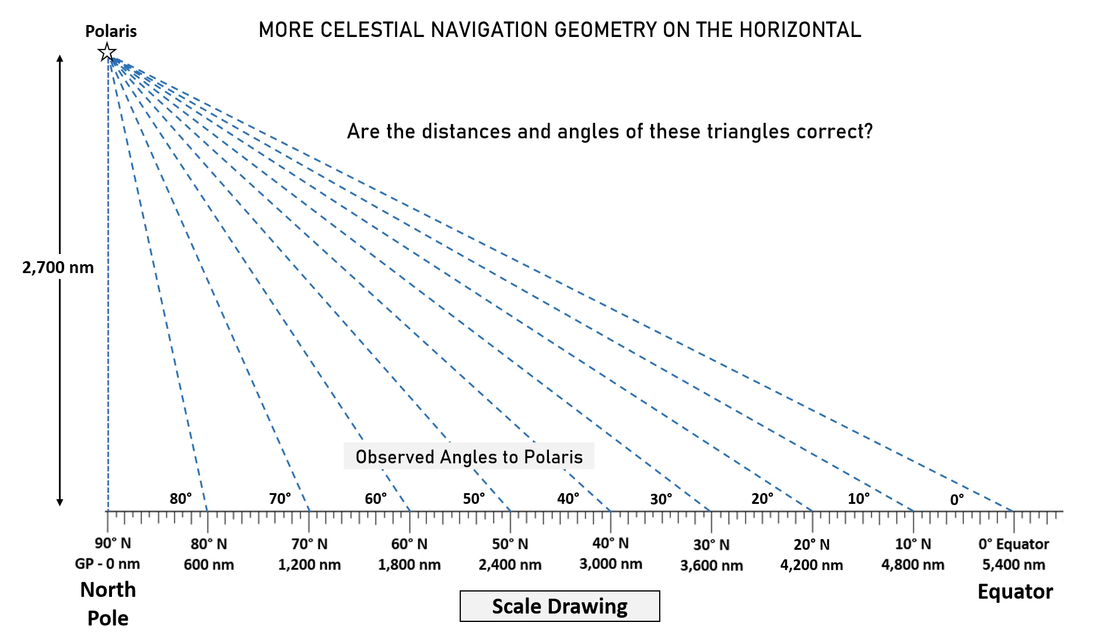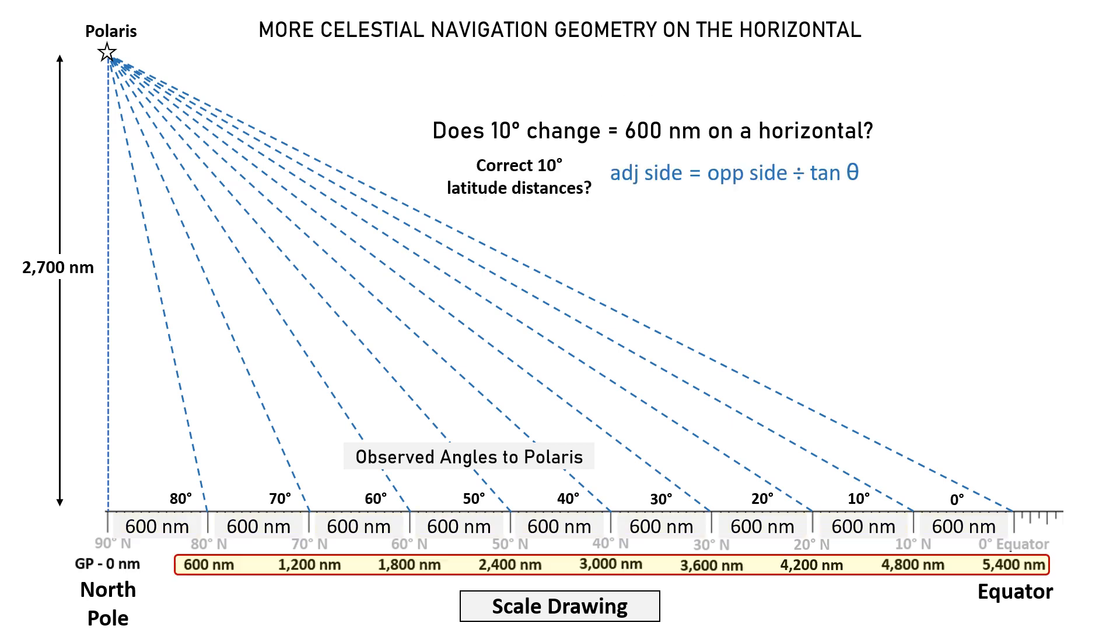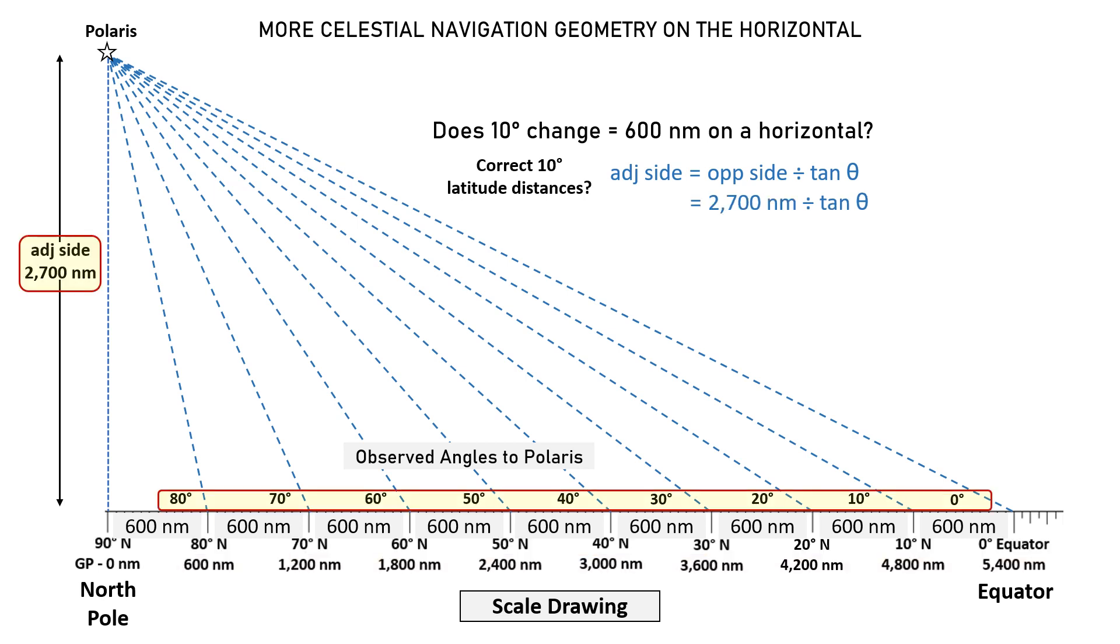Now let's draw the observed angles to Polaris from each of these latitudes. Now the question is, are the distances and angles of these triangles correct? And this is where we can use trigonometry. So let's see if every 10-degree change does equal 600 nautical miles on a horizontal. And all we need to do is use this trigonometric equation to check these latitude distances. So we will divide 2700 nautical miles by the tangent of the observed angle.